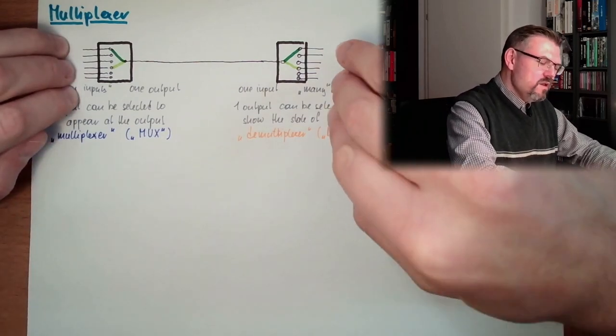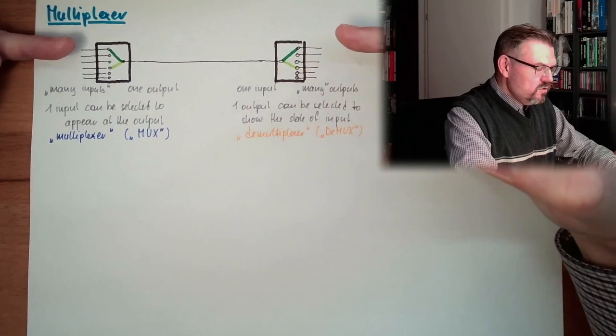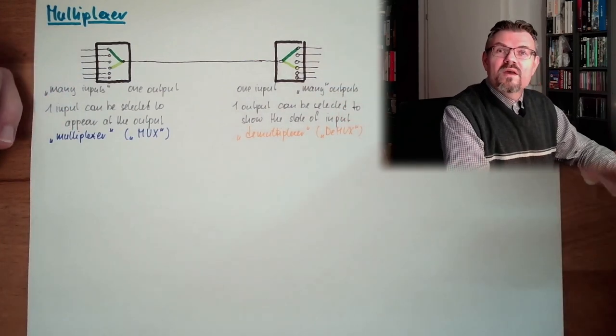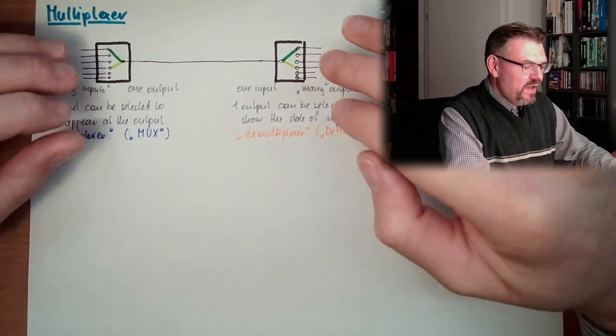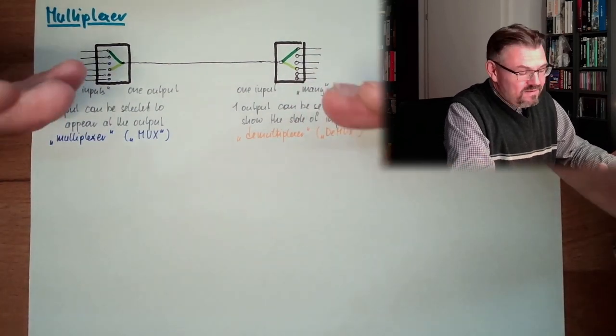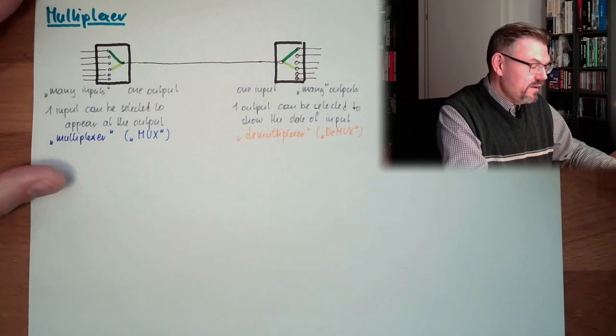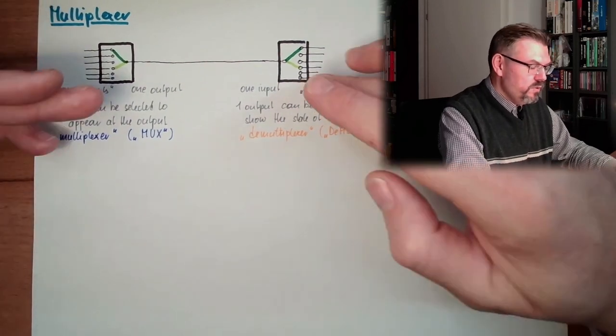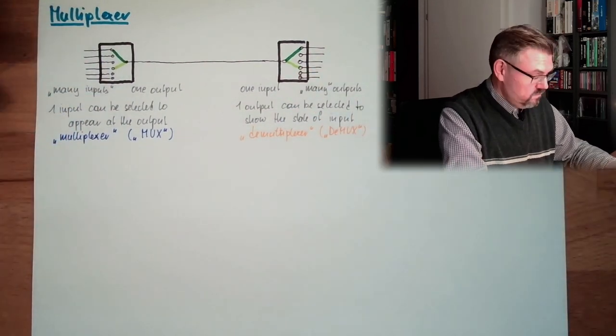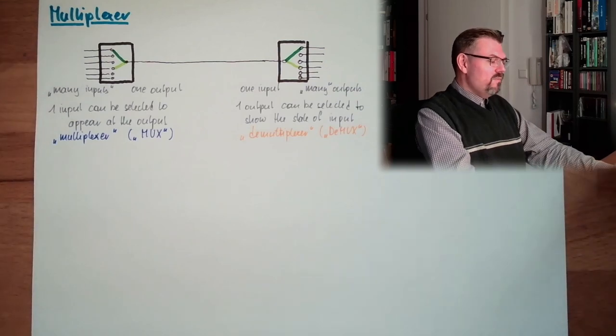We have here one byte, and we will transfer one bit after the other. And at the end, when I'm at the eighth output, a full byte has been transferred. And in between, I only need one line. So, this is the reason for multiplexing.